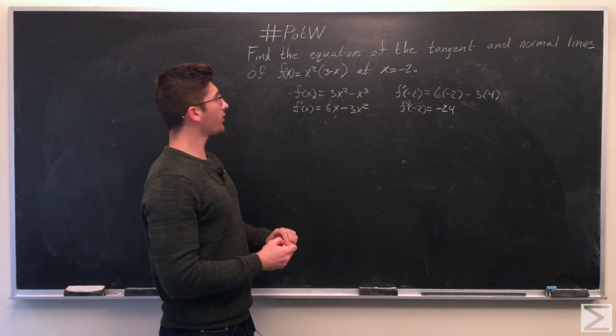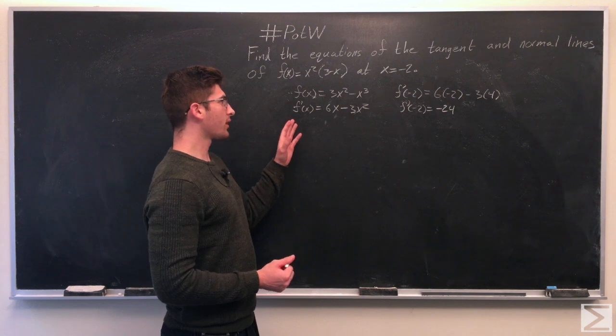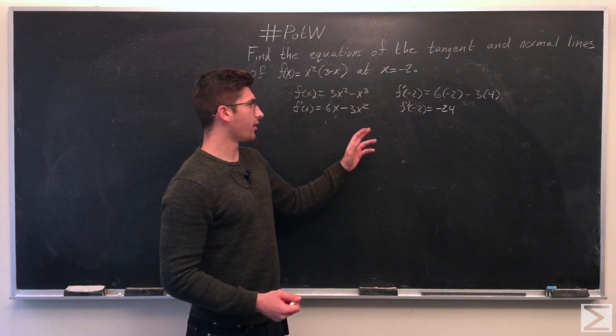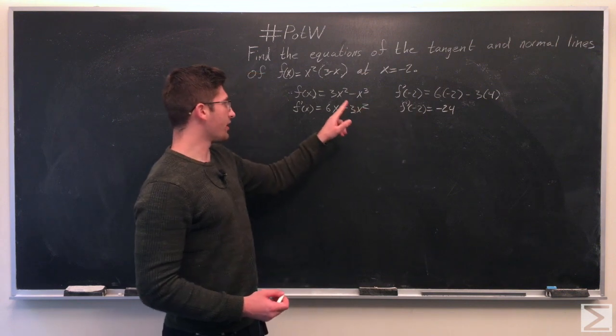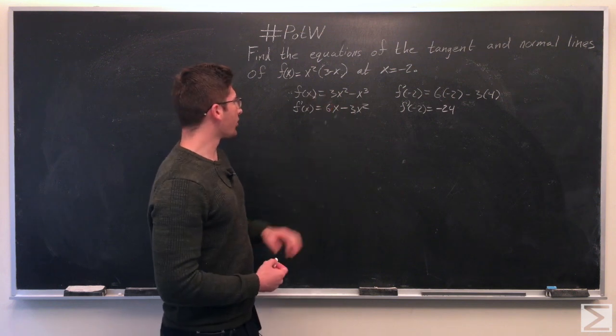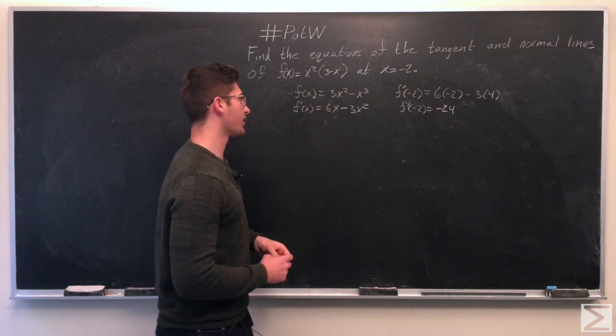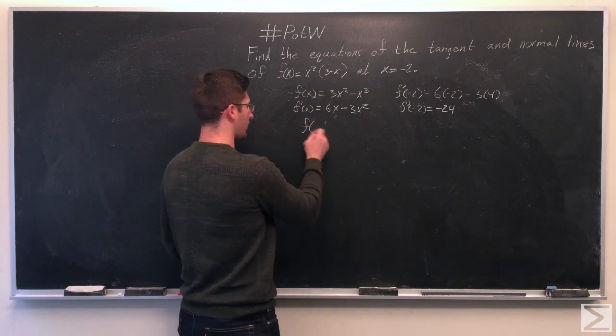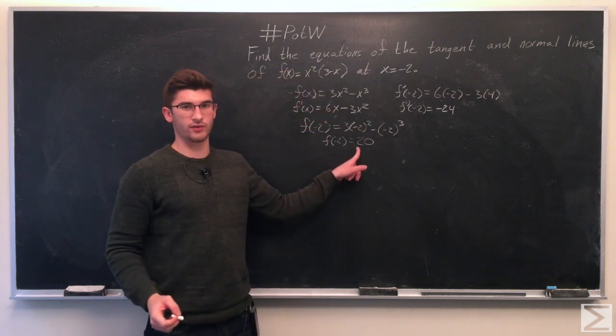So now to find the equation of the tangent line, we need to find the value of the constant so that at x equals negative 2, the y-value is the same as it is for f of x. So we need to plug in negative 2 into f of x. So when we do that, we get f of negative 2 equals 20.